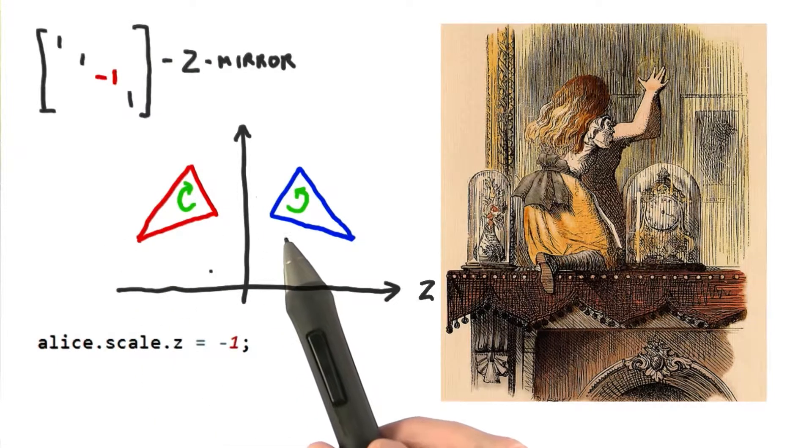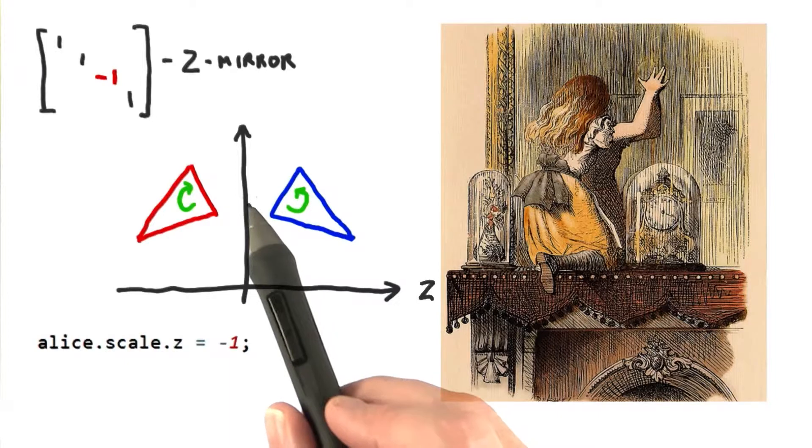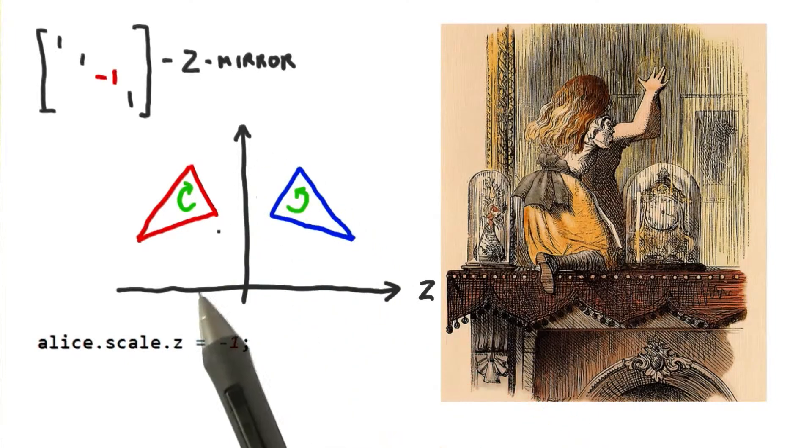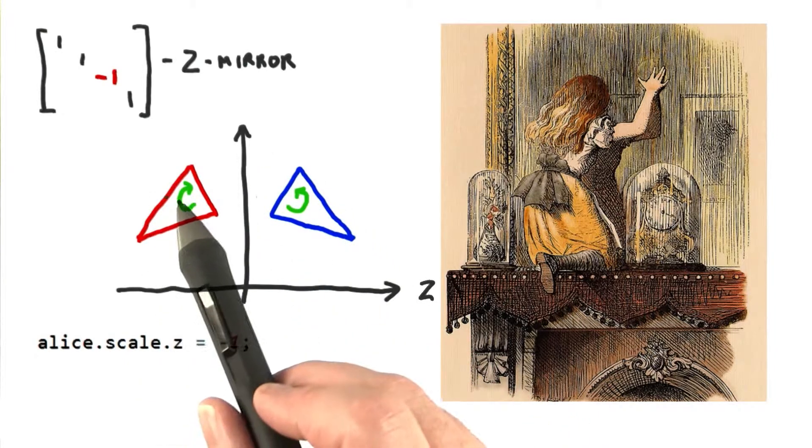That is, in a right-handed system, a triangle's vertices normally proceed counterclockwise around its edge. After a mirror matrix, this ordering is reversed.